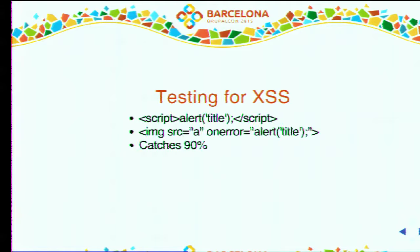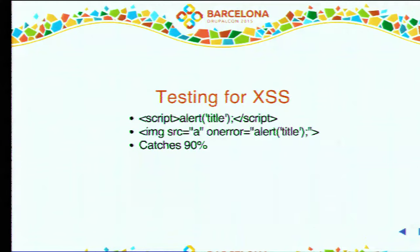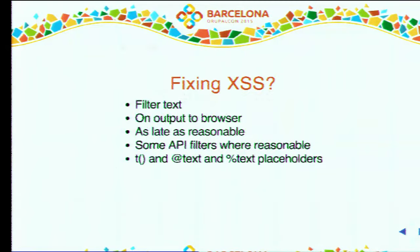Not only script tags are a problem — image tags with special attributes can also trigger an alert, which is also a cross-site scripting issue. Of course, this penetration test looks boring — it's not something an attacker would actually use. An attacker would load an external script from their evil website and execute that, which is a bigger threat. This is just for testing, but with that test you can catch up to 90% of XSS vulnerabilities on your site when you look at all the pages that get rendered with such tags.